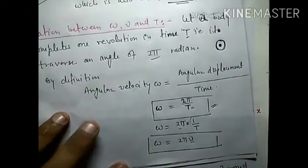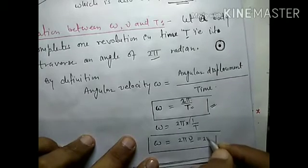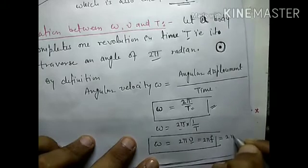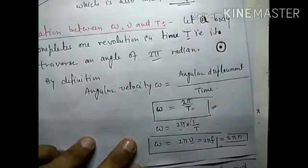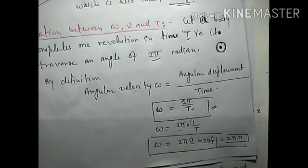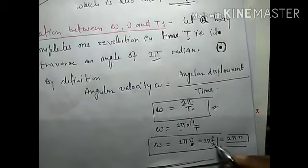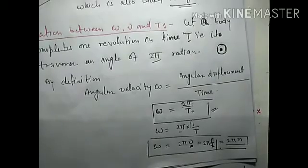इसको ऐसे लिख सकते हैं: ω = 2π / T, और 1/T = frequency ν, इसलिए ω = 2πν। Note करें कि frequency को कभी-कभी f से भी represent करते हैं और कभी-कभी n से भी। Light के case में frequency को ν से represent करते हैं, अन्य cases में mostly f से।